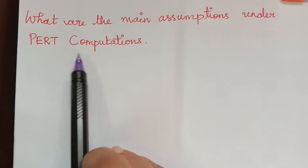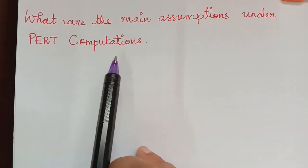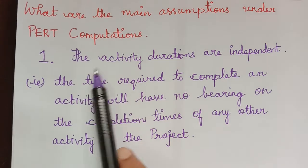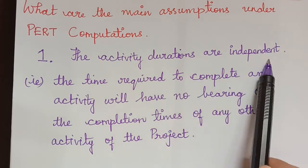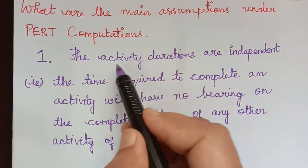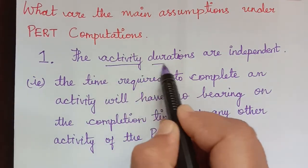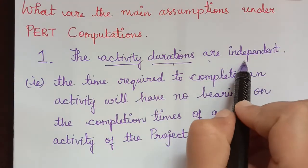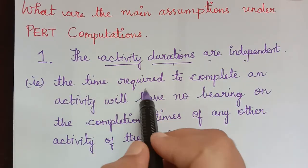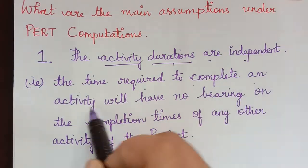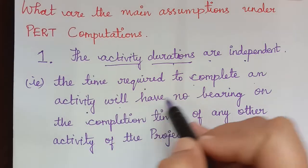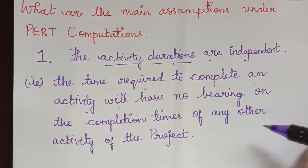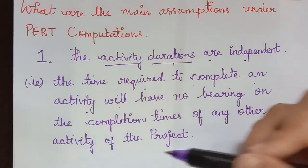The first assumption under PERT computation is that the activity durations are independent. So we know we have activity durations. Those activity durations are independent. That is, the time required to complete an activity will have no bearing on the completion times of any other activity of the project.